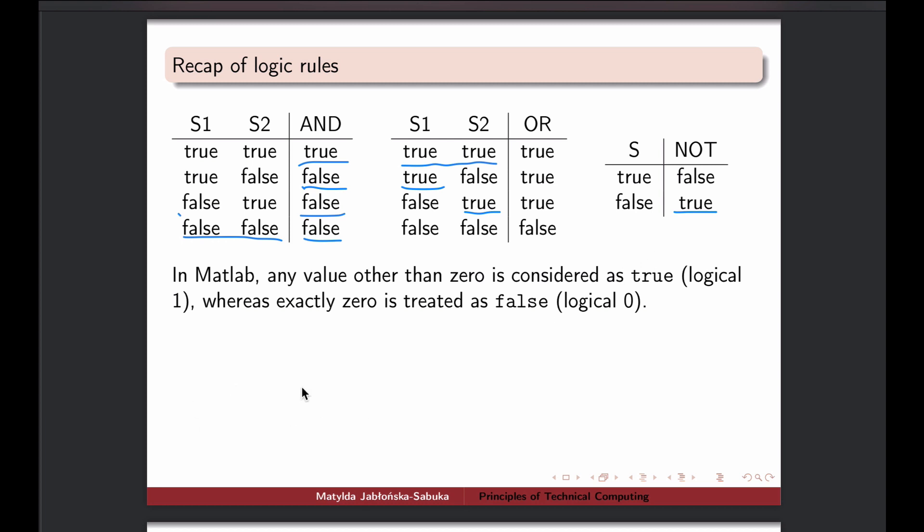And if we talk about numerical values, for instance, if you have variable x equal to 5 and maybe y equal to 0, for MATLAB, anything that is not 0 is treated as true. So it doesn't have to be a logical variable, it can be a numerical variable, but as long as it's not equal exactly 0, then it is true. And only if it's precisely 0, then it is treated as logical false.